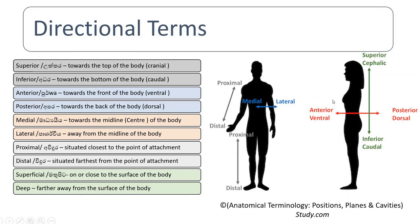Another name for anterior is ventral, and another name for posterior is dorsal. Then there is medial and lateral. Medial means towards the midline of the body. Lateral means away from the midline of the body.